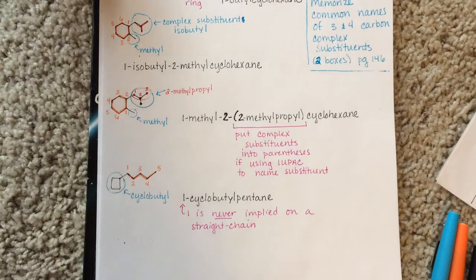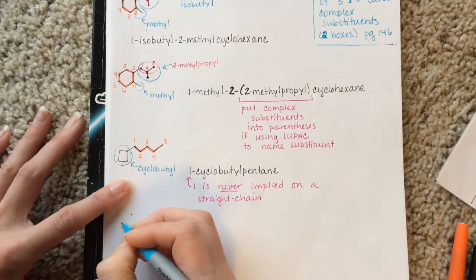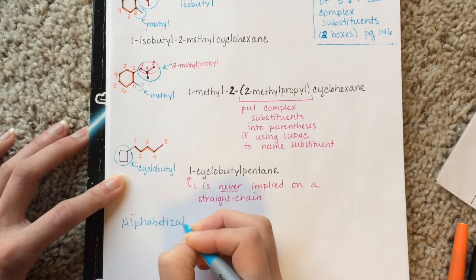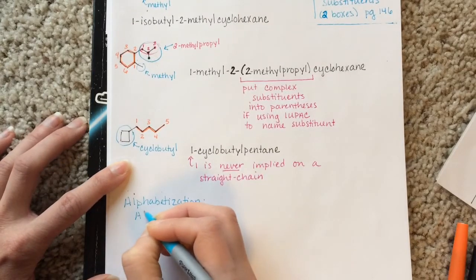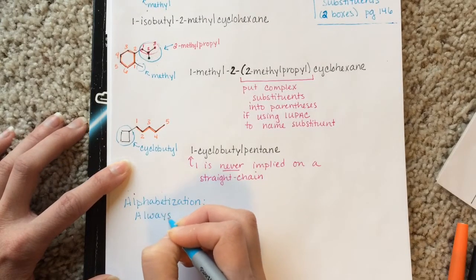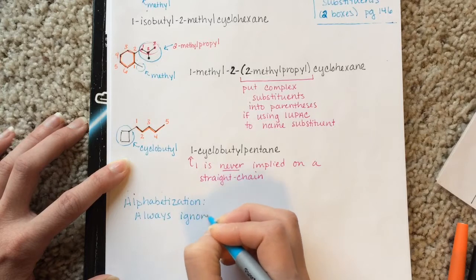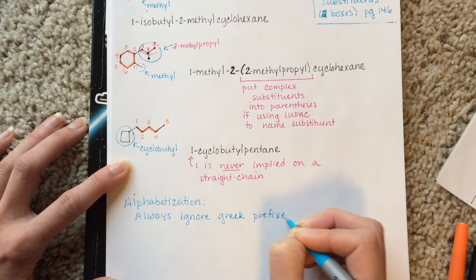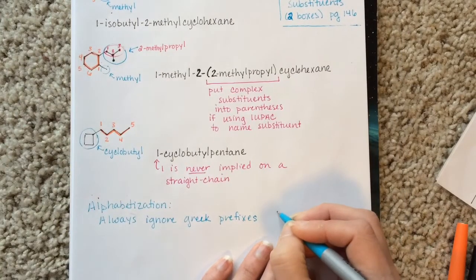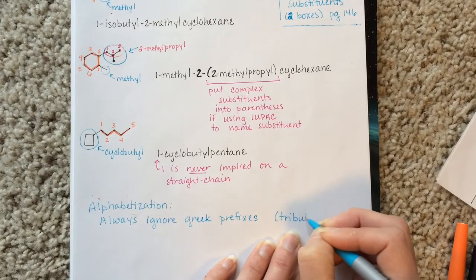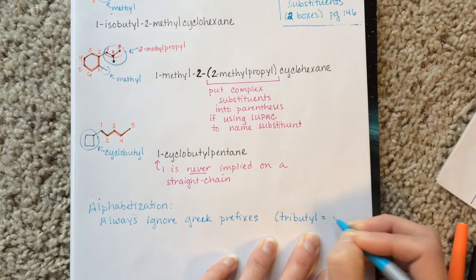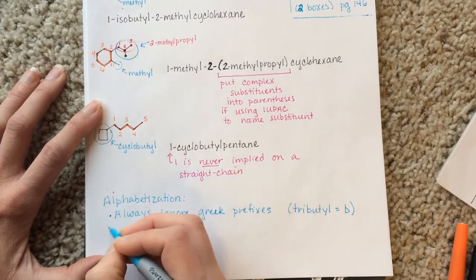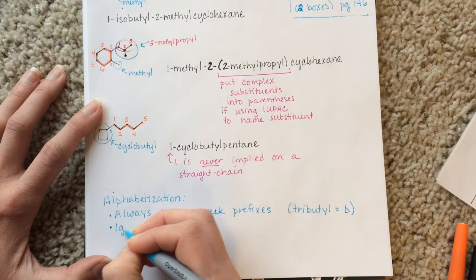So last thing that I want to leave you with for this nomenclature stuff is just some general guidelines for alphabetization because it can get confusing. When you're alphabetizing, you always ignore Greek prefixes, which I've already told you. So a tributyl is going to be alphabetized as a B, not a T.